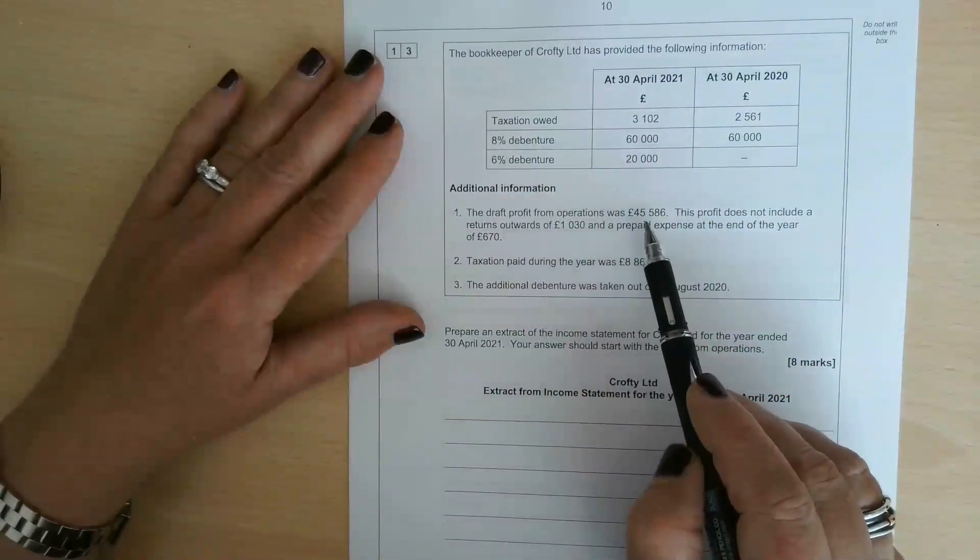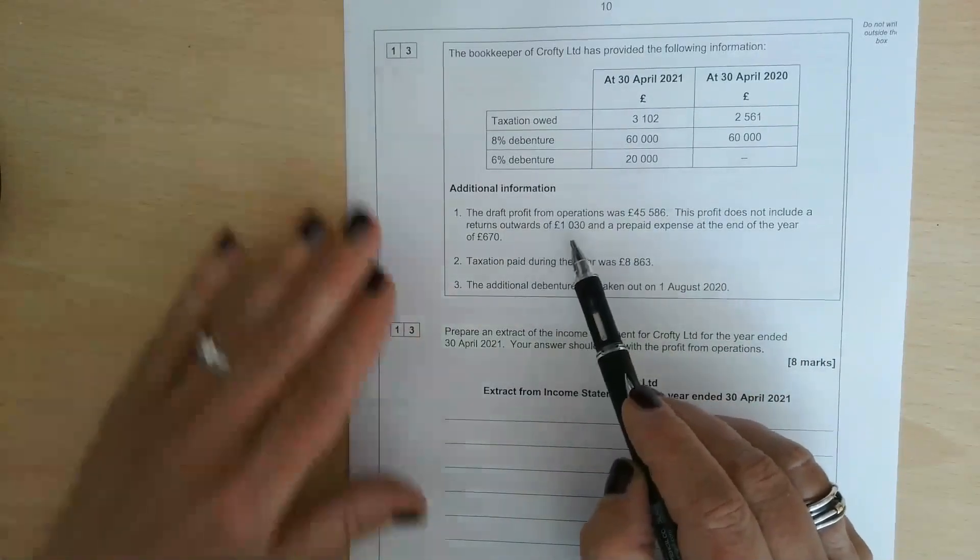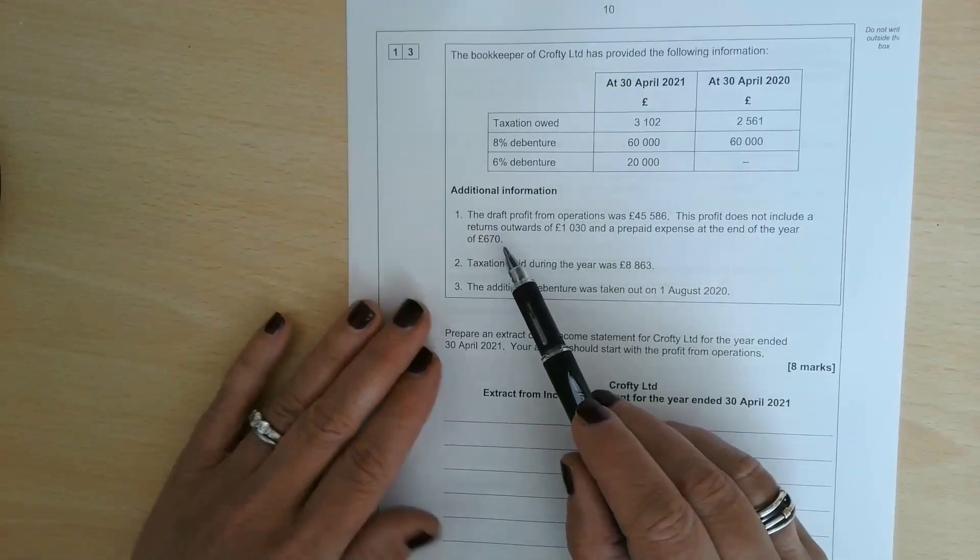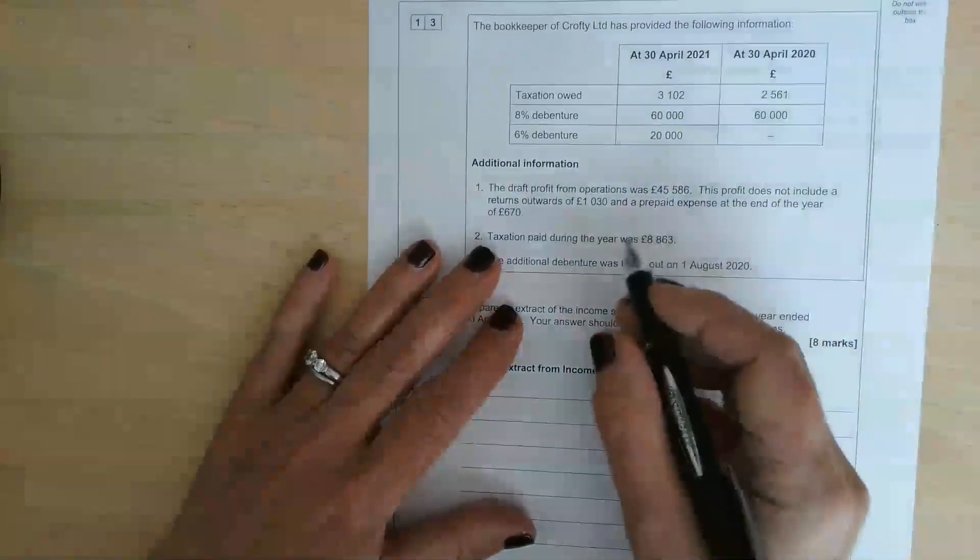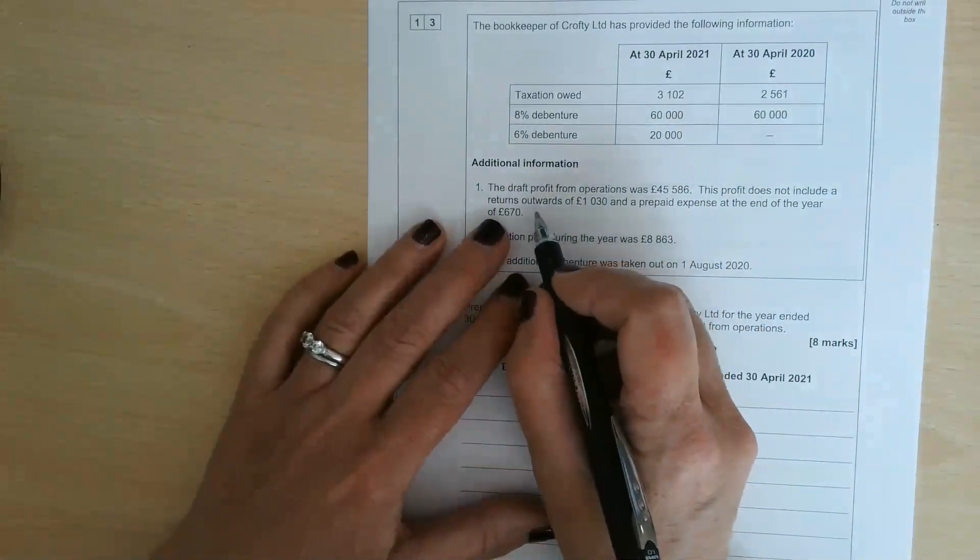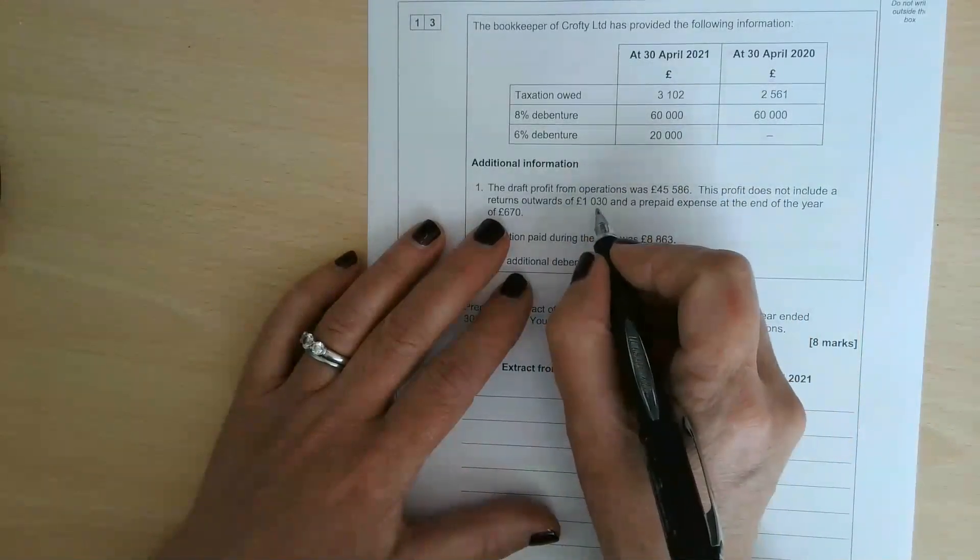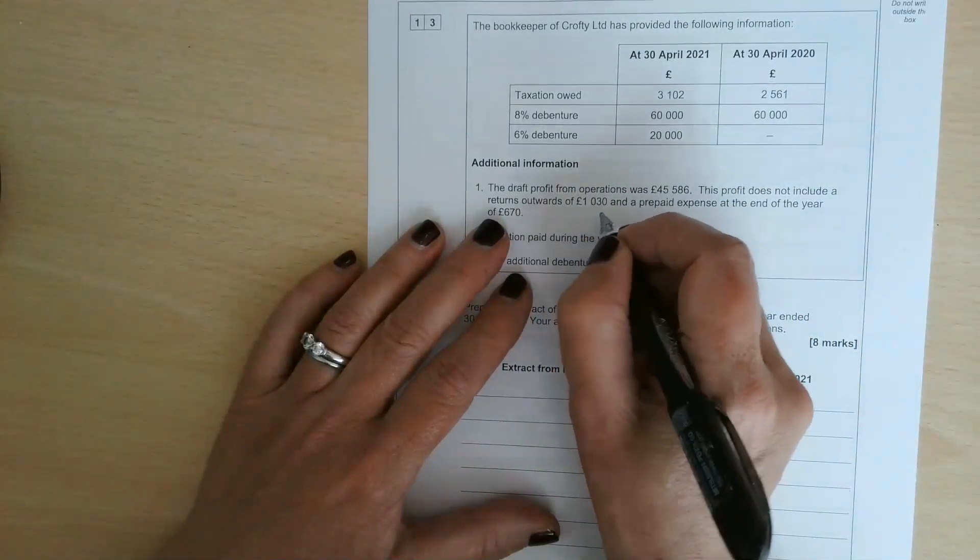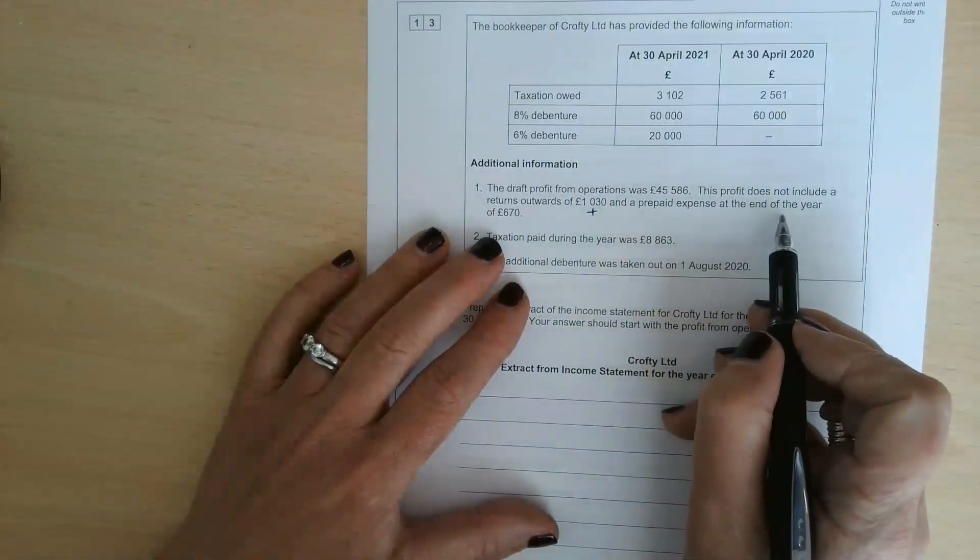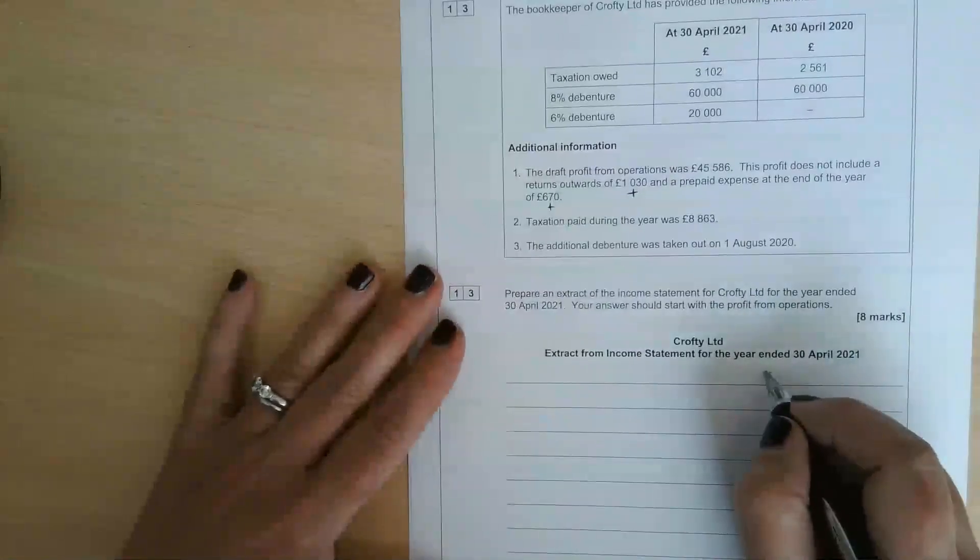We've been told the draft profit from operations was £45,586, and that it doesn't include returns outwards of £1,030 and a prepaid expense of £670. Returns outwards are returns going back to suppliers, which reduces our cost of sales and increases the profit. A prepaid expense will reduce the expense, so that will increase the profit as well.